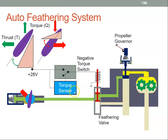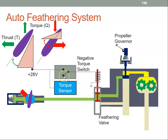Within the gearbox there may be a torque sensor — something to measure the amount of torque produced — and within that sensor there will be a negative torque switch. This sensor determines that there is negative torque, and when there's negative torque it will close this switch.